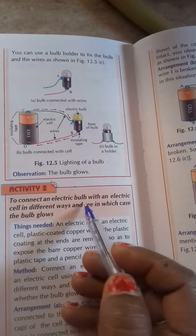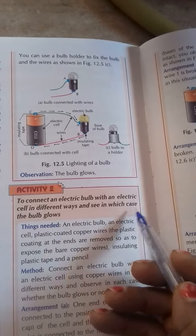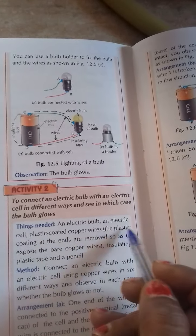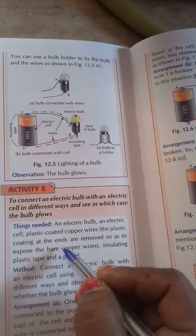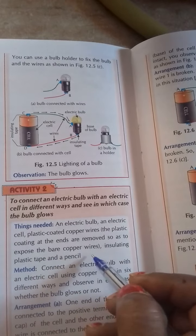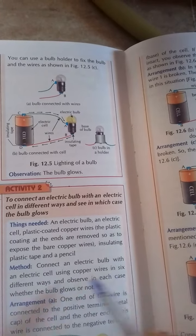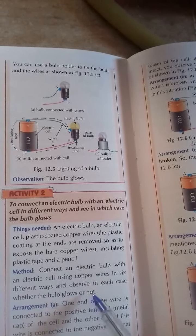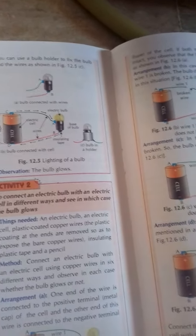Activity 2: to connect an electric bulb with an electric cell in different ways and see in which case the bulb glows. Things needed: an electric bulb and electric cells, plastic coated copper wires. The plastic coating at the ends are removed so to expose the bare copper. Insulating plastic tape and pencil. Method: connect an electric bulb with an electric cell using copper wire in six different ways and observe in each case whether the bulb glows or not.